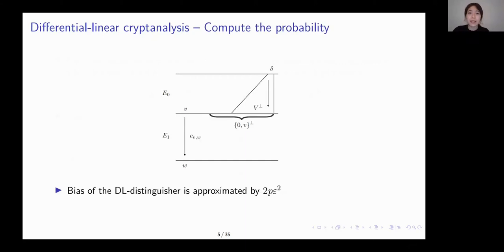Often, we split the cipher into two parts, in some cases three parts, with an intermediate layer connecting E0 and E1. In E0, we find a differential with probability p, and in E1, we have a linear approximation with bias epsilon. Then the total bias of the distinguisher is 2 times p times epsilon squared.